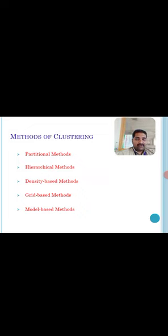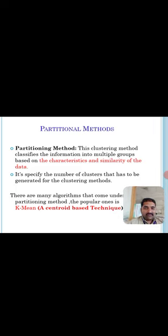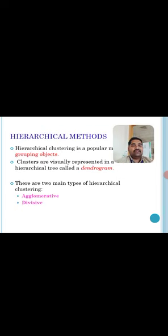First, coming to partition methods: this method classifies the data and information into multiple groups based on the characteristics and similarity of that particular data. It also specifies the various number of clusters that have to be generated for the clustering methods. There are many algorithms for partitioning clustering. Under partitioning methods, the main algorithm is the k-means algorithm, which is a centroid-based technique.